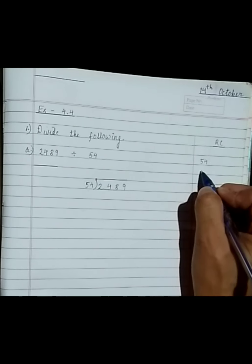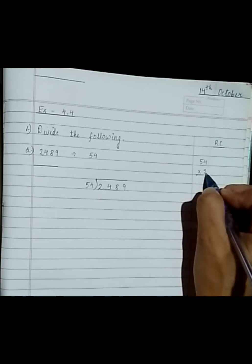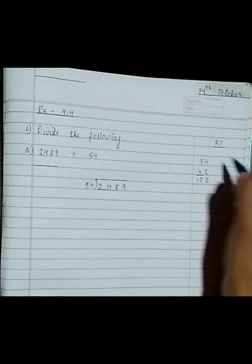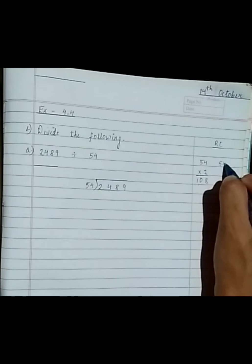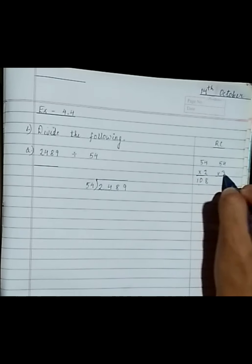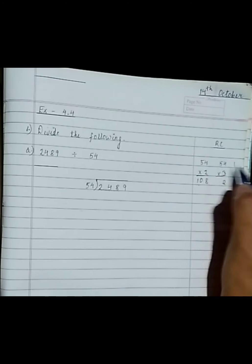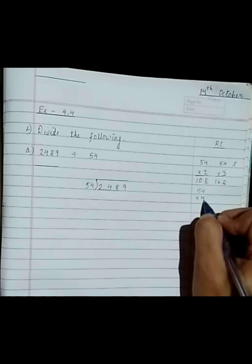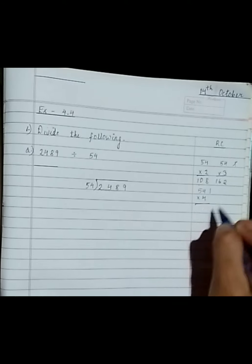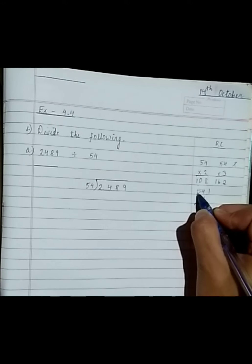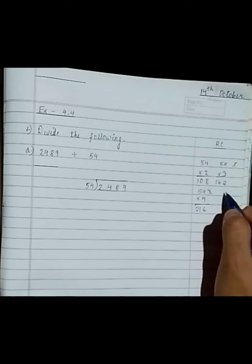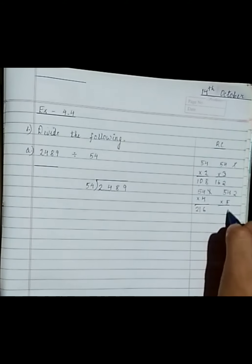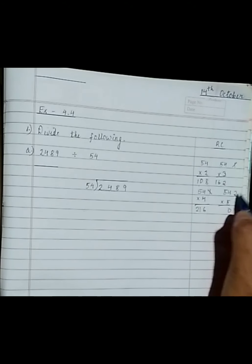We will start from 2. 54 into 2: 2×4 is 8, 2×5 is 10, so 108. 54 into 3: 3×4 is 12, 3×5 is 15, plus 1 is 16, so 162. 54 into 4: 4×4 is 16, 4×5 is 20, plus 1 is 21, so 216. 54 into 5: 5×4 is 20, 5×5 is 25, carry gives 270.